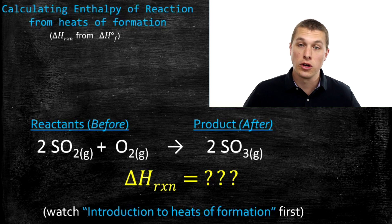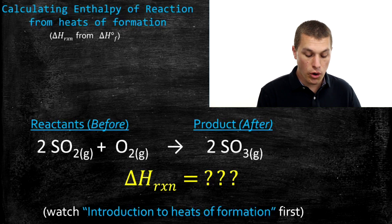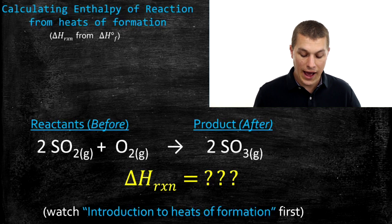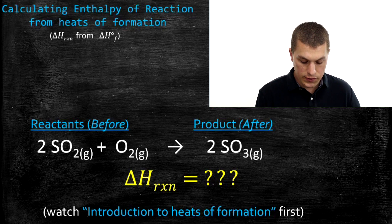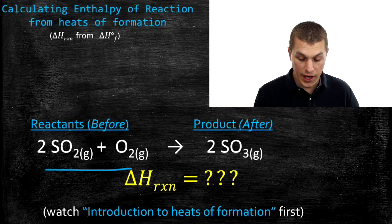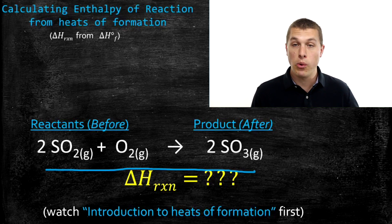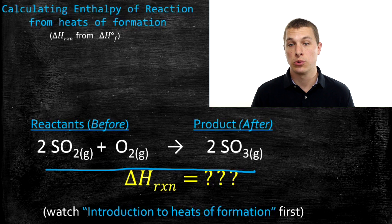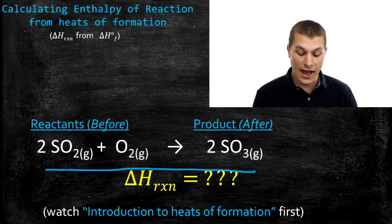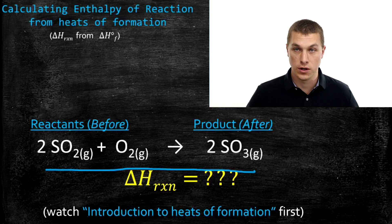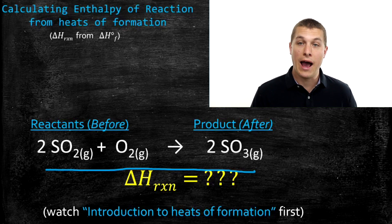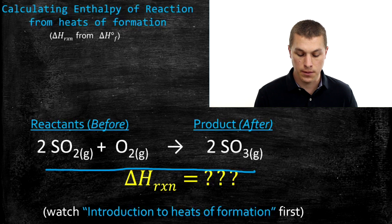The whole goal here is we're going to look at a reaction and figure out what the enthalpy of that reaction would be. We have this combination of sulfur dioxide with oxygen to make sulfur trioxide. What we want to know is how much heat is absorbed or released when that reaction runs — that's what the enthalpy of reaction will answer for us. I'm going to show you how we can use heats of formation to calculate that enthalpy of reaction.